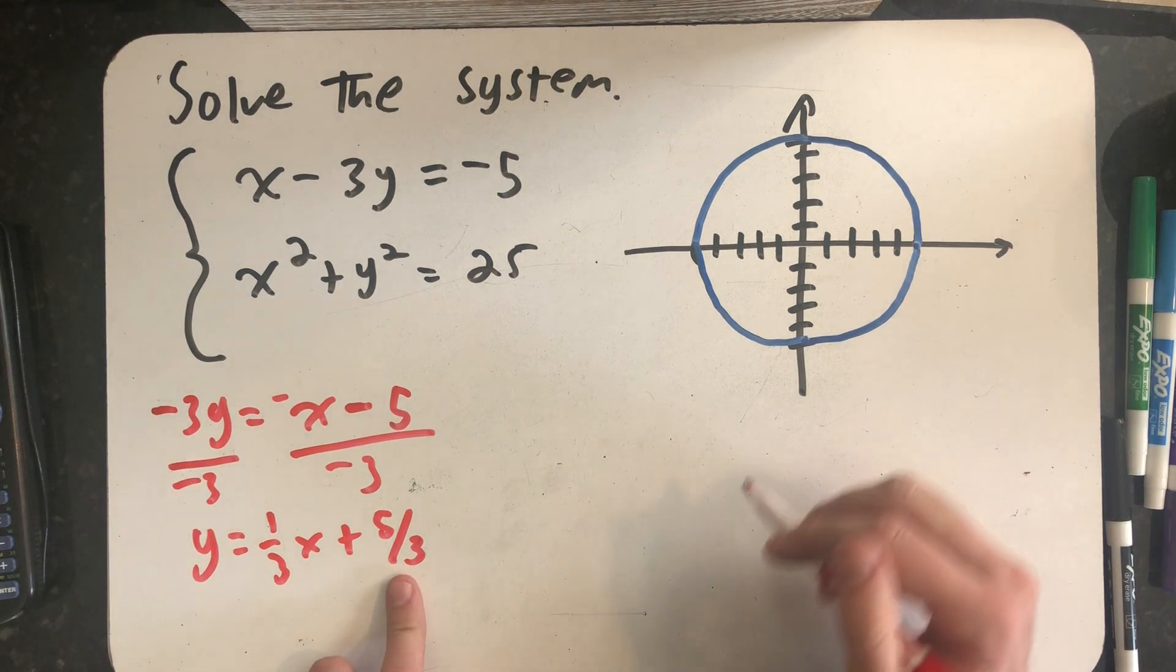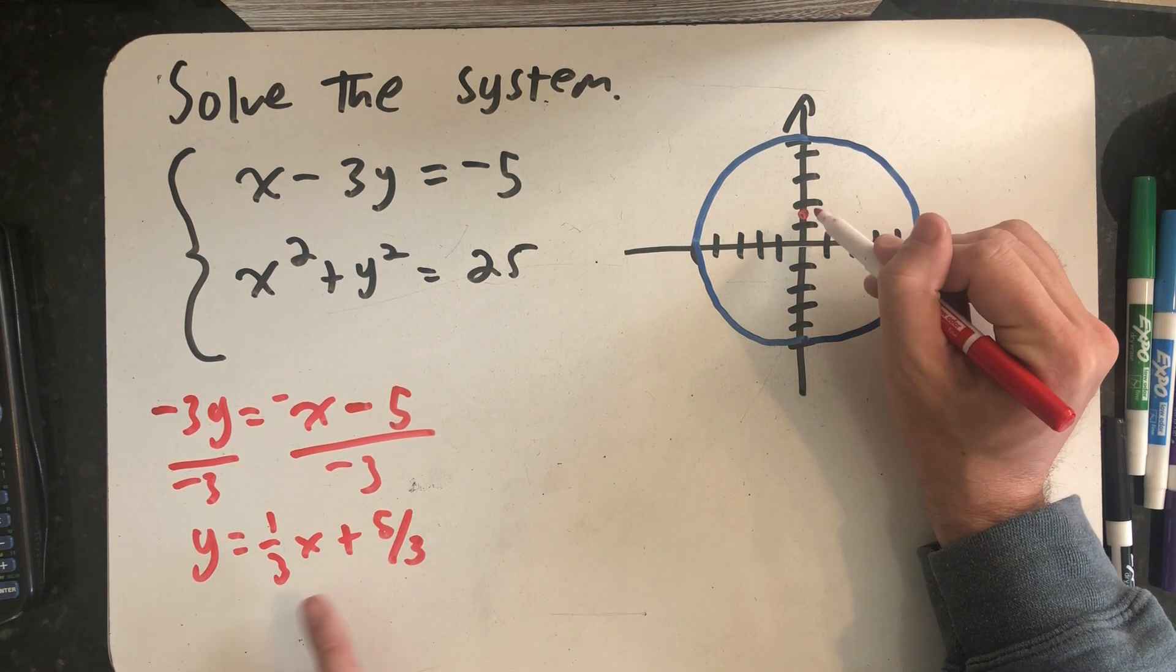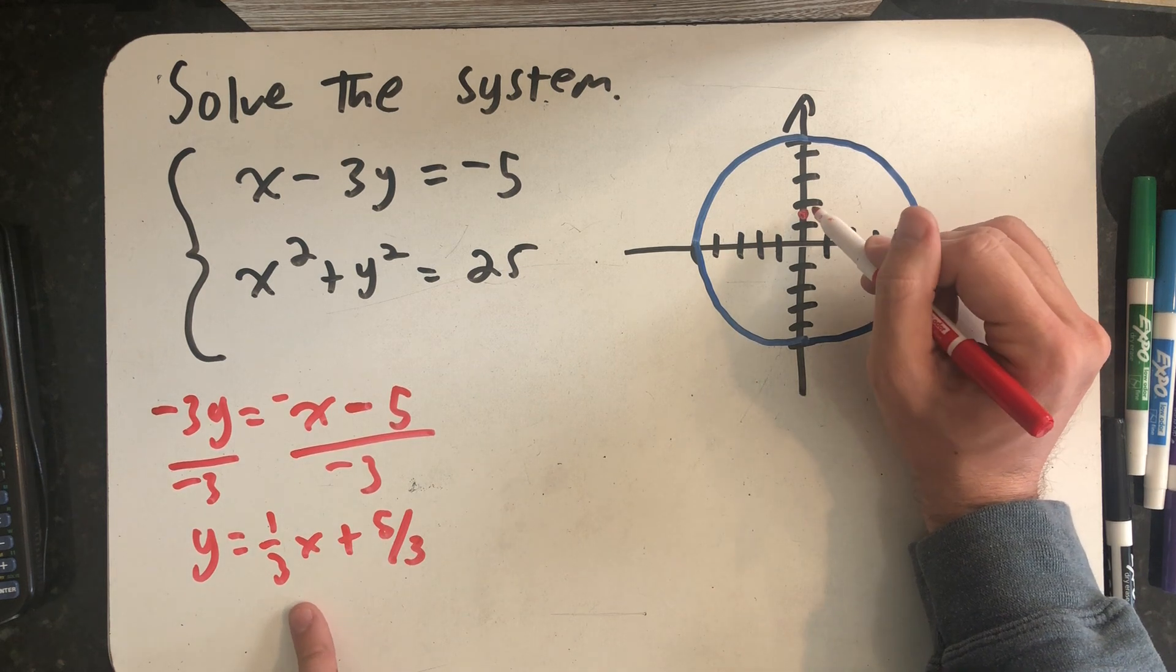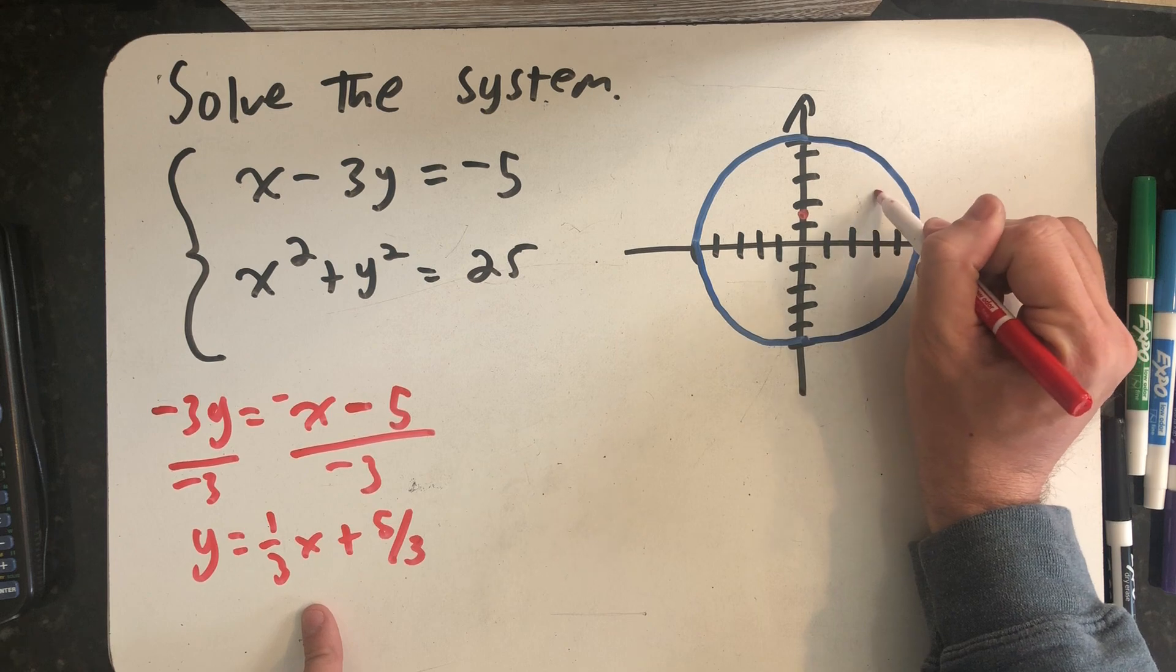So my y intercept is five thirds or one and two thirds, some point right about there. And I know the slope is one third, so I go up one and over three.